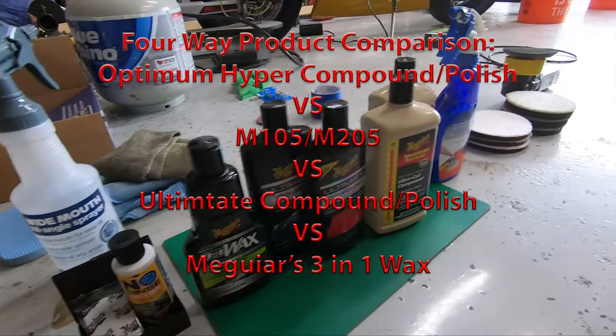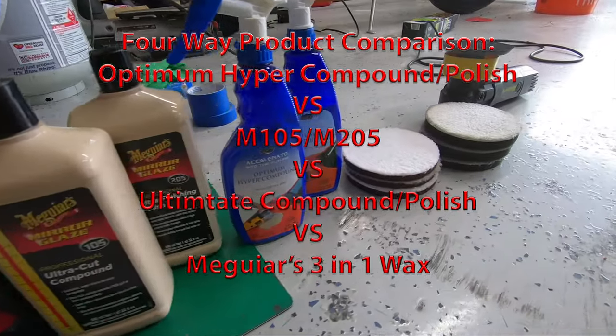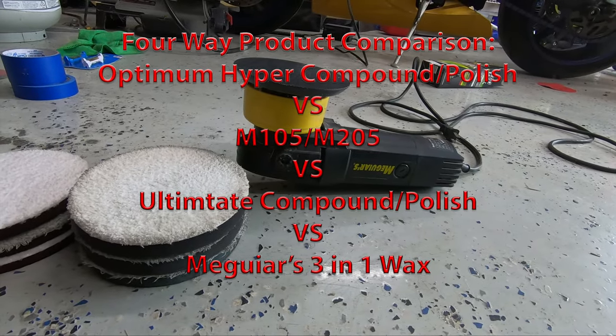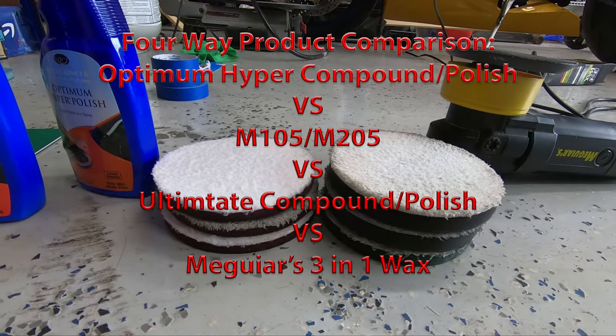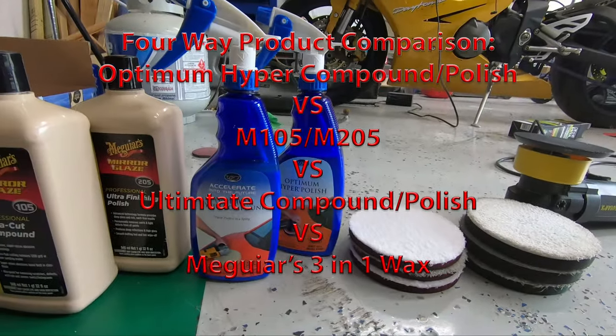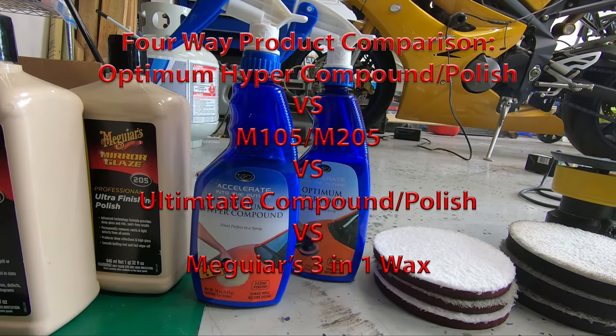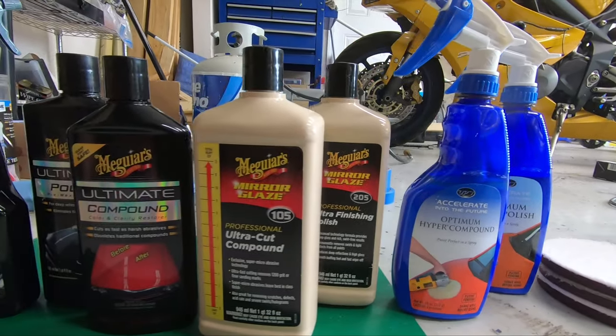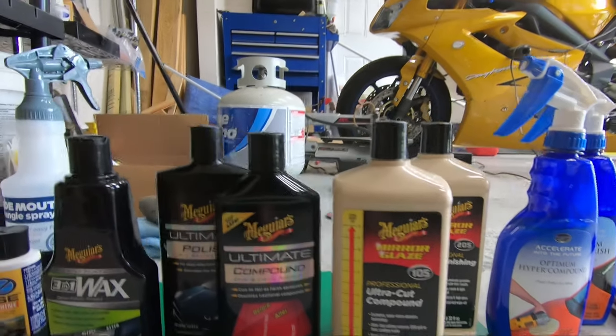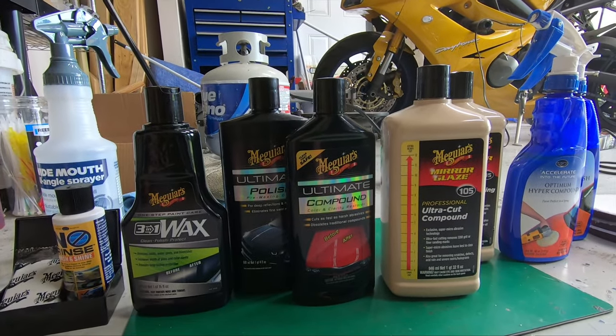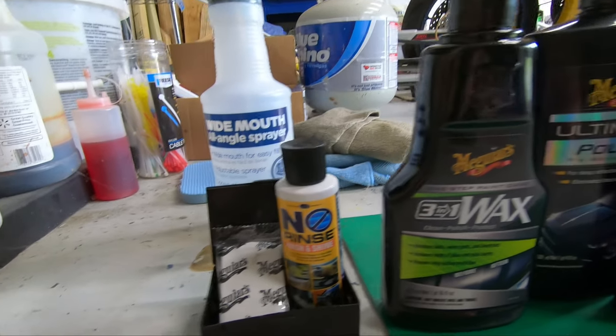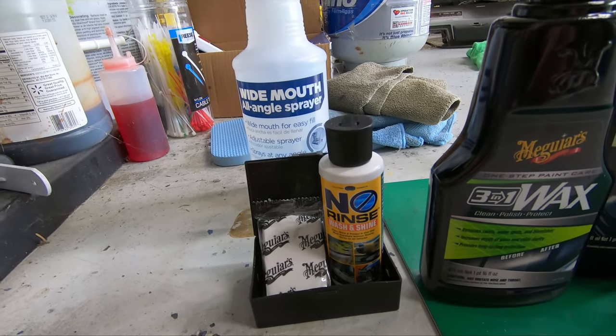We're going to be doing a four-way product comparison test on my mother's 2007 GMC Envoy. My goal is to make this as controlled as possible using the same amount of time and pads for each product. For this test we're using Meguiar's Dual Action Polisher, Meguiar's Microfiber Cutting and Polishing Pads, Optimum's Hyper Compound and Hyper Polish, Meguiar's M105 and M205, Meguiar's Ultimate Compound and Ultimate Polish, and lastly Meguiar's 3-in-1 Cleaner Wax. We'll be prepping the surface with Meguiar's Clay Bar and Optimum No Rinse.